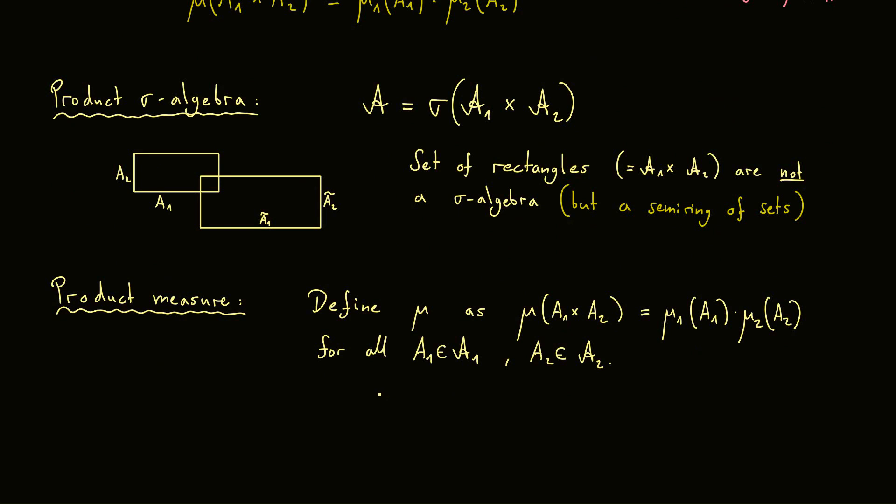Or in other words we have this one as a product for the rectangle given by A1 times A2. And at this point now we can just use Carathéodory's extension theorem. About this I have a whole other video. And we learned there that if we can define a measure on a semi-ring, we can extend that definition to the whole sigma algebra that is generated by this semi-ring. And with this procedure we get our product measure.